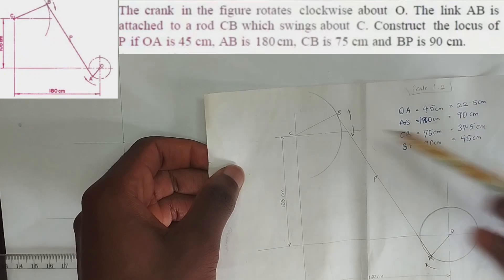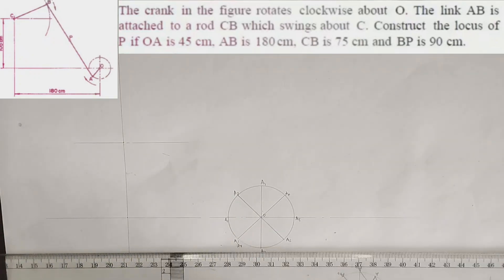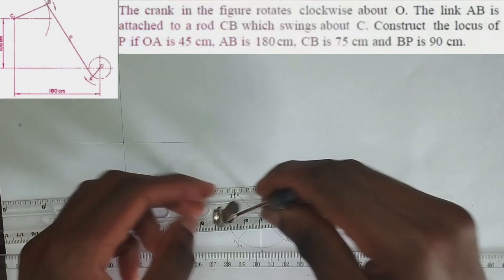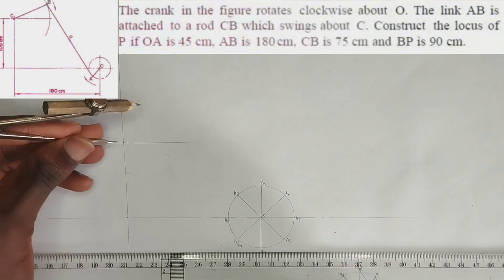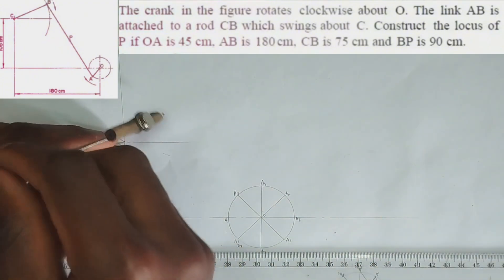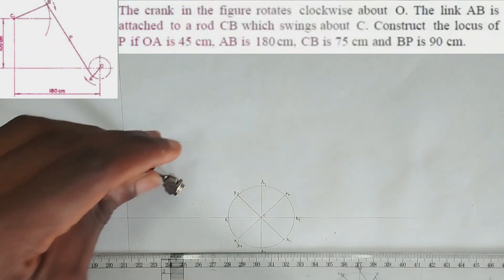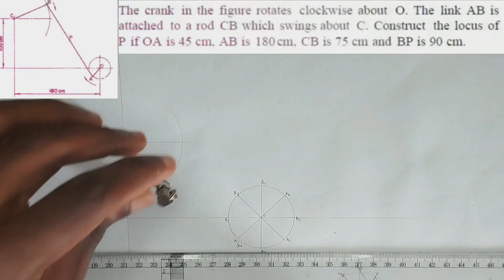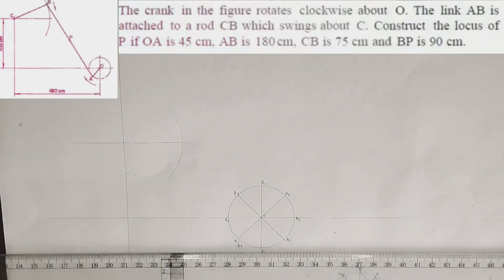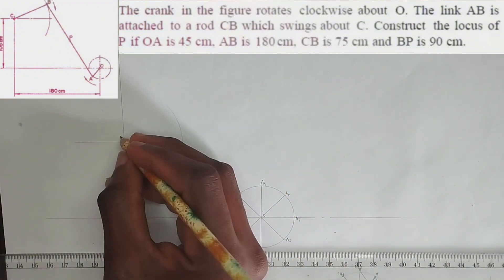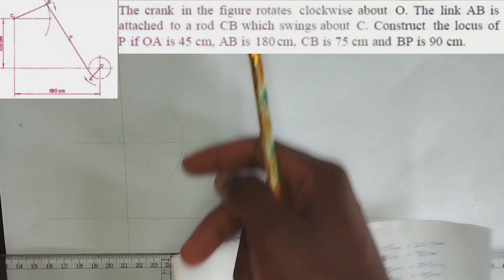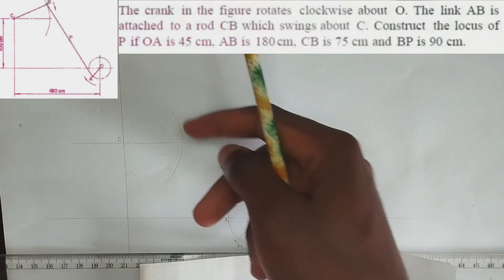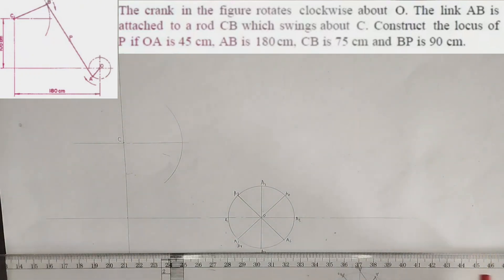We have been given point CB as 37.5 centimeters. I'm going to pick my compass and measure 37.5. I'll draw the curve — this point gives us point C. We have been told that this point swings.